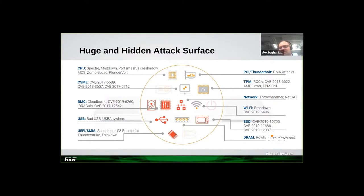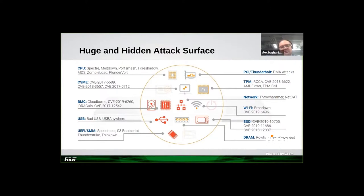Even appliances — in most cases just an ARM, MIPS, or x86 box — have the same complexity as a server. They may have remote interfaces like BMC or web interfaces. All of these have their own update processes and supply chain and security practices, which have a lot of weaknesses.